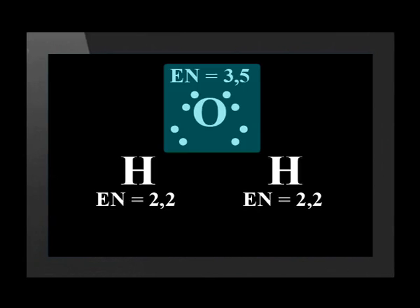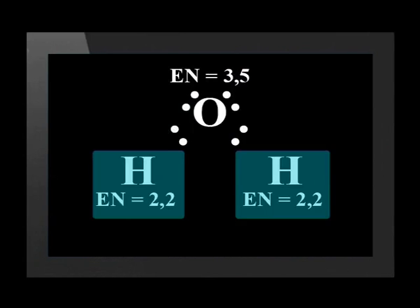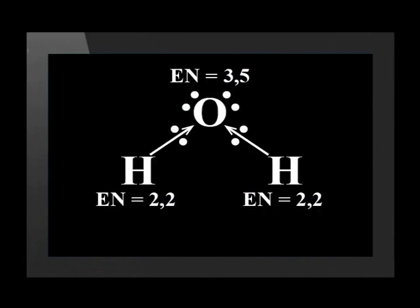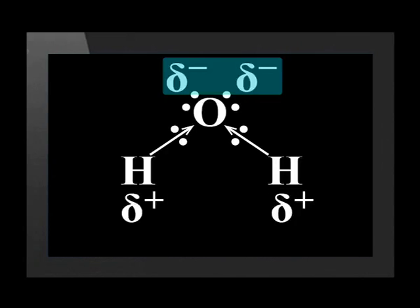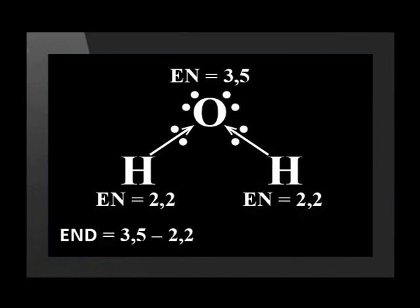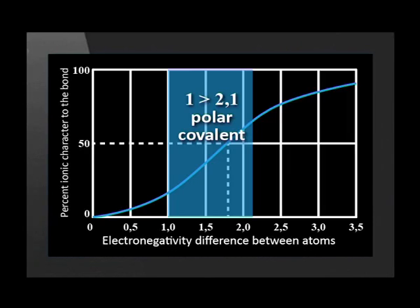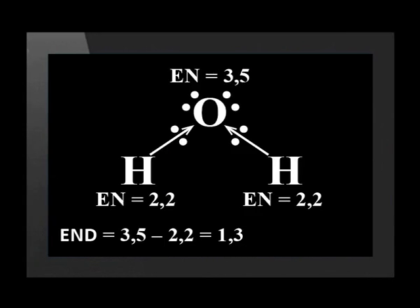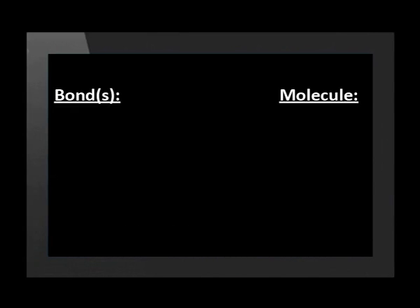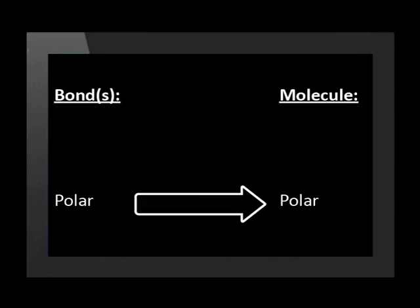Let's remind ourselves about the bonds in water. We know that oxygen has a greater electronegativity than hydrogen. So the oxygen nucleus pulls both shared electron pairs more strongly to itself than hydrogen does. The oxygen end of the molecule becomes negative and the hydrogen end positive. The electronegativity difference between oxygen and each hydrogen equals 1.3, which falls in the range of polar covalent bonds. So each of the two bonds inside water is polar, and the molecule is polar.